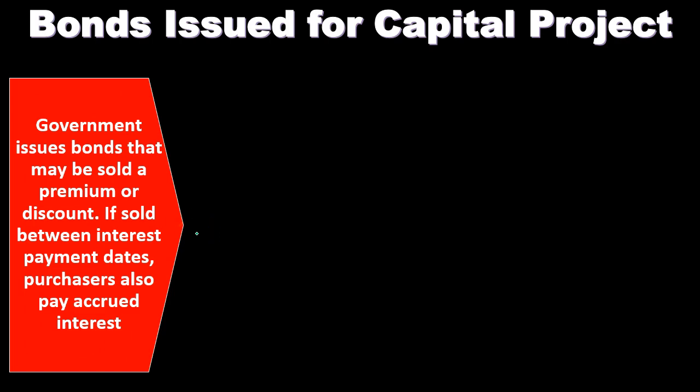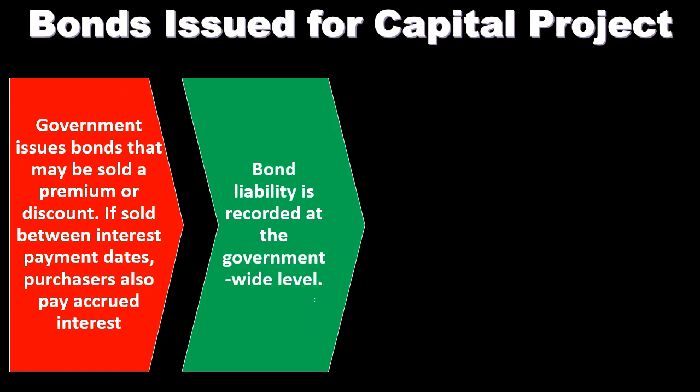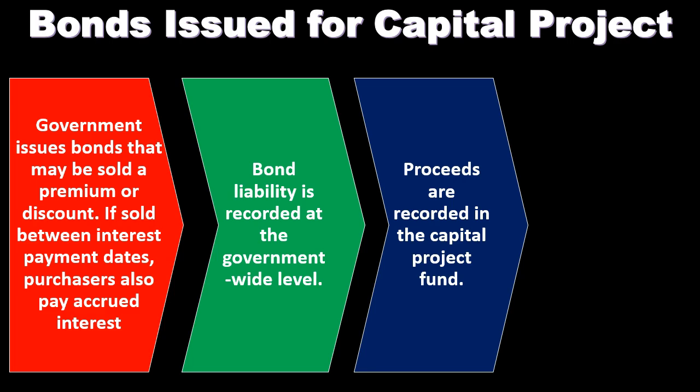If the bond is sold between interest payment dates, the purchaser also pays accrued interest. The bond liability is recorded at the government-wide level. When recording the bond, we debit cash and credit bond payable. The bond payable is a long-term liability at the government-wide level; it won't be recorded at the fund level. The proceeds, however, are going to be recorded in the capital project fund.